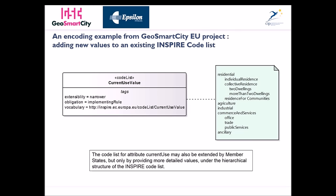It's a real example from the GeoSmartCity European project. The INSPIRE data theme involved is Buildings, and in this case we need to add new values to an existing INSPIRE codelist. The relevant codelist is CurrentUse value, and its extensibility is 'narrower' — meaning we can extend it only with a hierarchical relationship. The data specification says that the codelist for attribute CurrentUse of the Building feature type may also be extended by member states, but only by providing more detailed values under the hierarchical structure of the INSPIRE codelist.